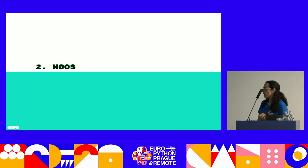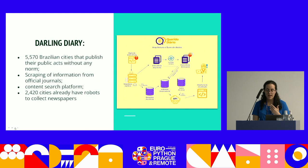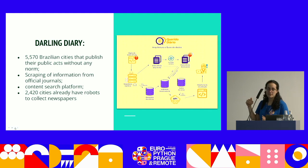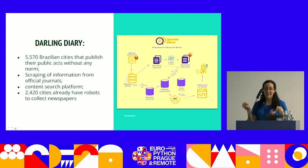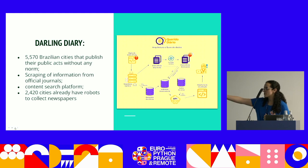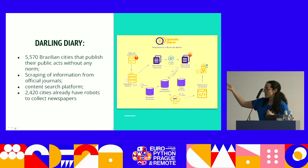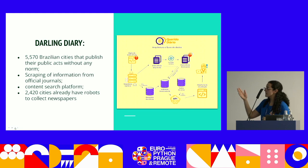Now I'll show an example of an NGO helping with data transparency. The name of the project is Darling Diary — Querido Diário in Portuguese. It has this name because in Brazil every city must publish its public acts in something called an official diary. But every city publishes their diary in a different way, which makes it very hard to aggregate. This NGO has created 2,040 robots to get this information on a daily basis. We still need people to help build more, because they have only created robots for about half the cities. You can search information in their platform.